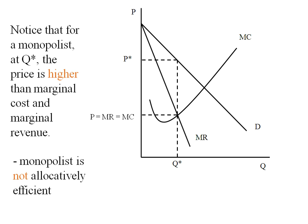What this tells us is the monopolist is not allocatively efficient. Allocative efficiency means price equals marginal cost. In this case we're charging a price higher than marginal cost.